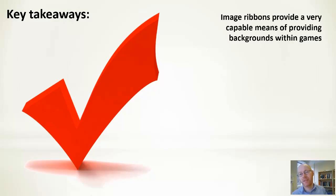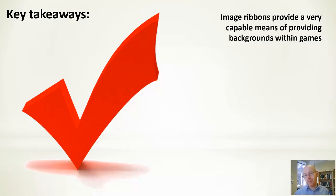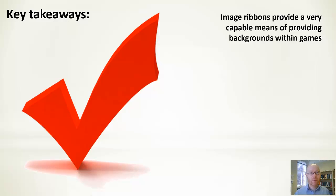The key takeaway is that image ribbons are quite useful. The general N-image form makes for a nice algorithm to think about, but most commonly you'll use a single seamless image that wraps around. Combining several ribbons gives a nice parallax effect to convey depth or movement in games. Next in the graphics series we'll look at tiling — similar to ribbons but repeating a single image both horizontally and vertically to fill an area.